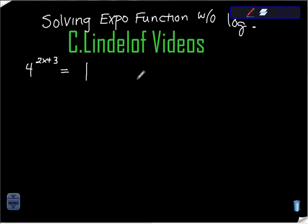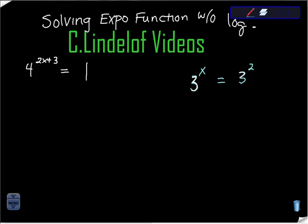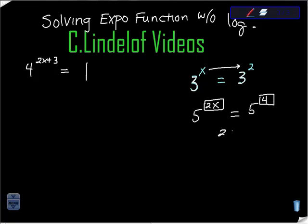This is about using the same base. If I said 3 to the x is the same as 3 to the second, the answer is obvious: x is equal to 2. Or if I said 5 to the 2x is equal to 5 to the 4th, these exponents have to match when the bases are the same. So this turns into 2x equals 4, and x equals 2.